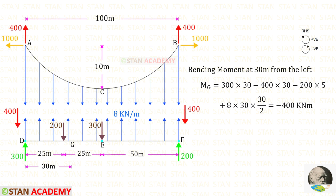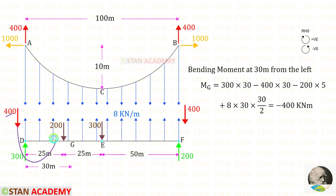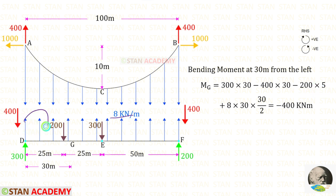Now let us find the bending moment in the girder at 30 meters from the left side. The reaction VED is acting clockwise, positive, distance is 30, so 300 into 30. The cable reaction is acting anticlockwise, negative, distance 30. The 200 kN load is acting anticlockwise, negative, distance is 30 minus 25, which is 5. The uniformly distributed load is acting clockwise, positive, distance is 30. Finally, for the bending moment we will get minus 400 kilonewton meter.